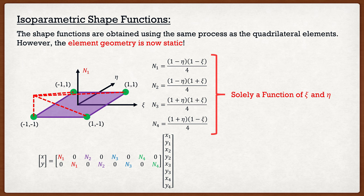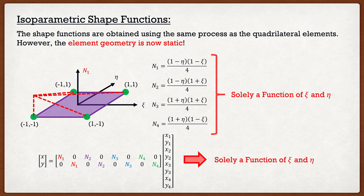With the mapping function now solely a function of ζ and η, finding a coordinate is straightforward: to find global coordinate (x1, y1) for node 1, substitute ζ = -1, η = -1 into the mapping formula. This is how we map between the two systems — nice and simple now that our shape functions are just functions of ζ and η.